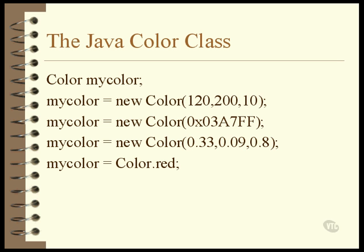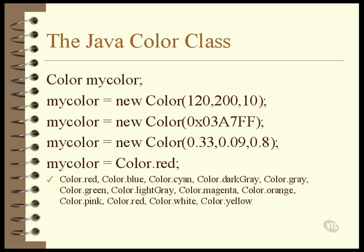For convenience, some of the more common color objects already exist and are there for you to use. These predefined colors are all defined inside the color class, already instantiated as objects and ready to be stored in your graphics object or wherever else you need them. There are a total of 12 predefined colors, including black and white as well as the three primary colors.